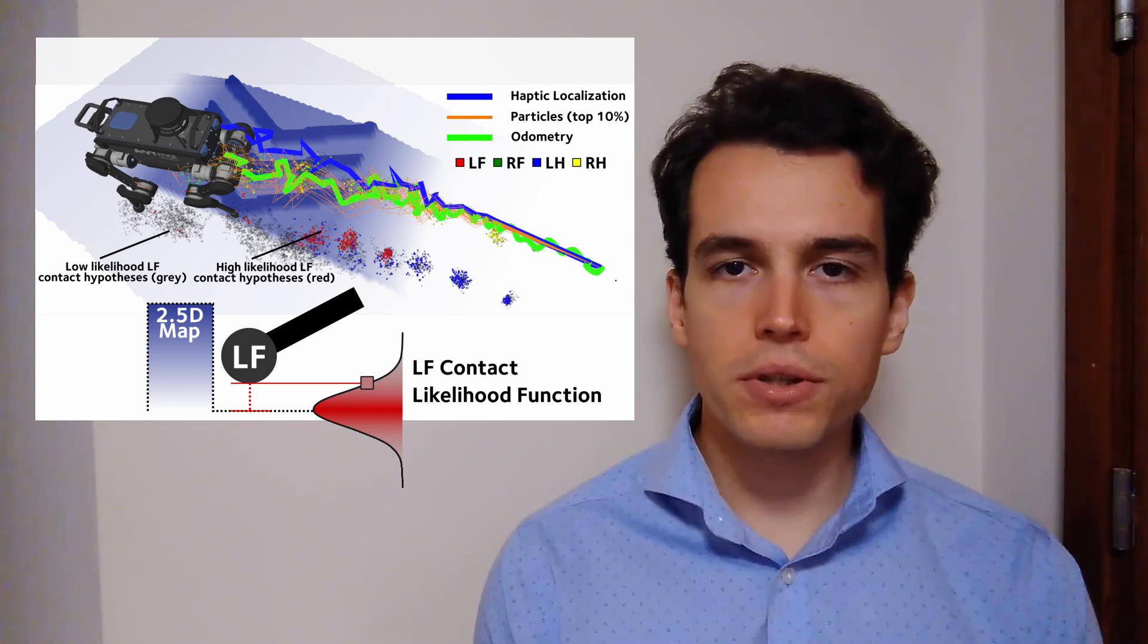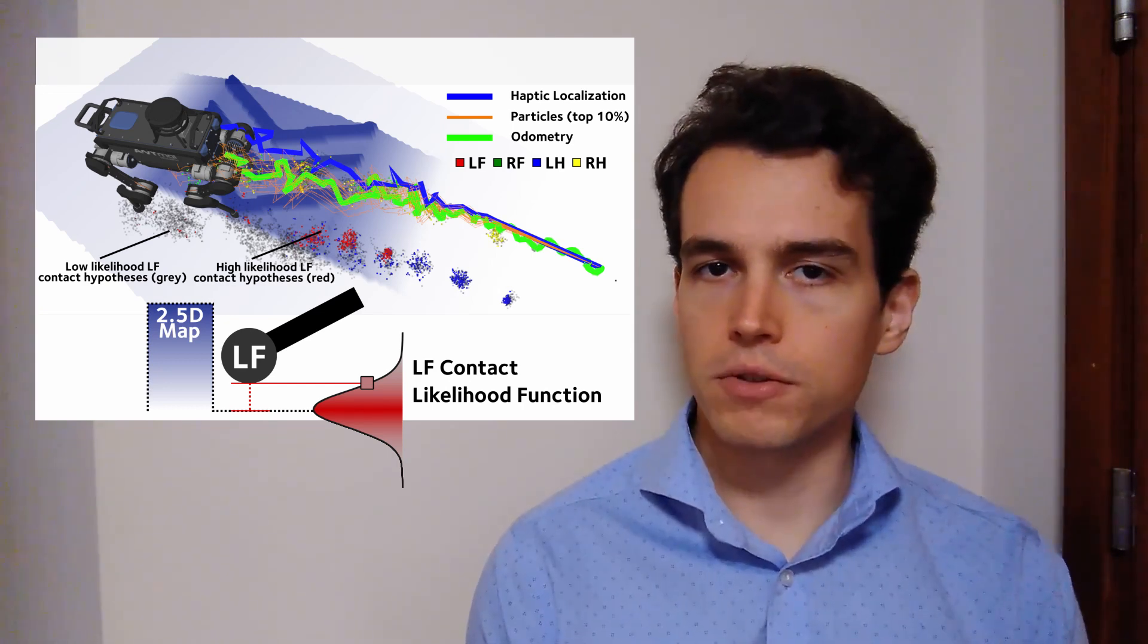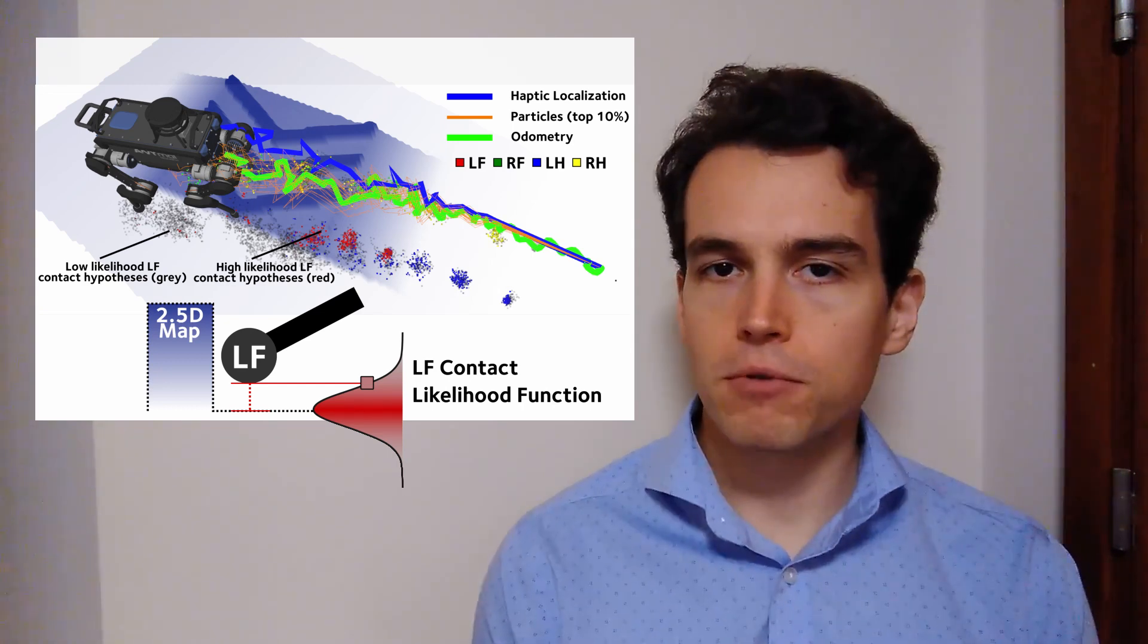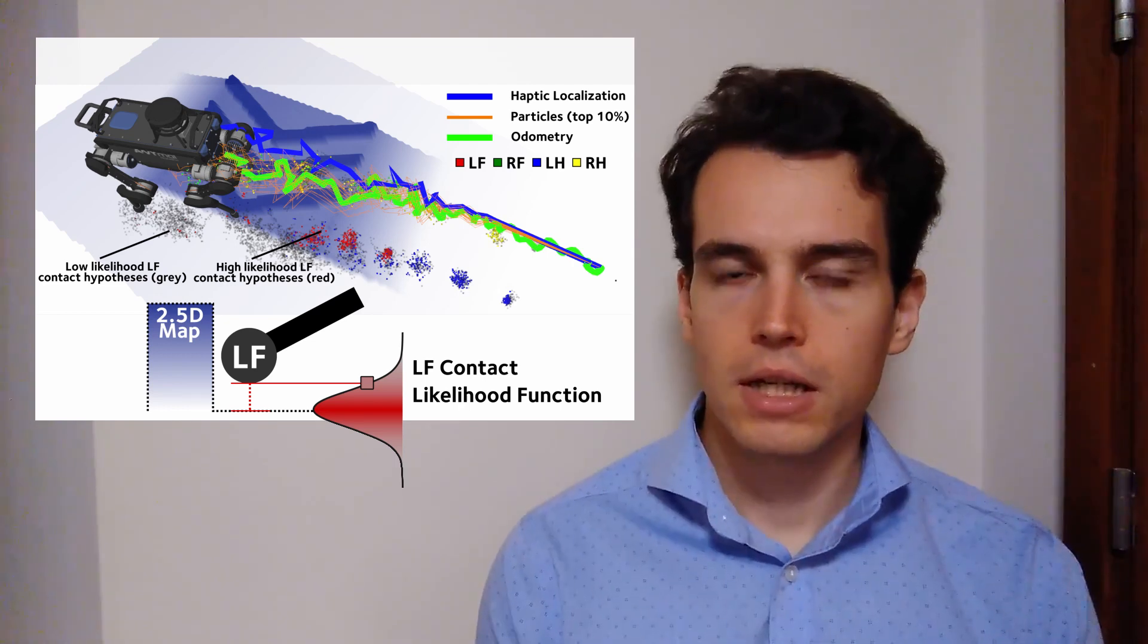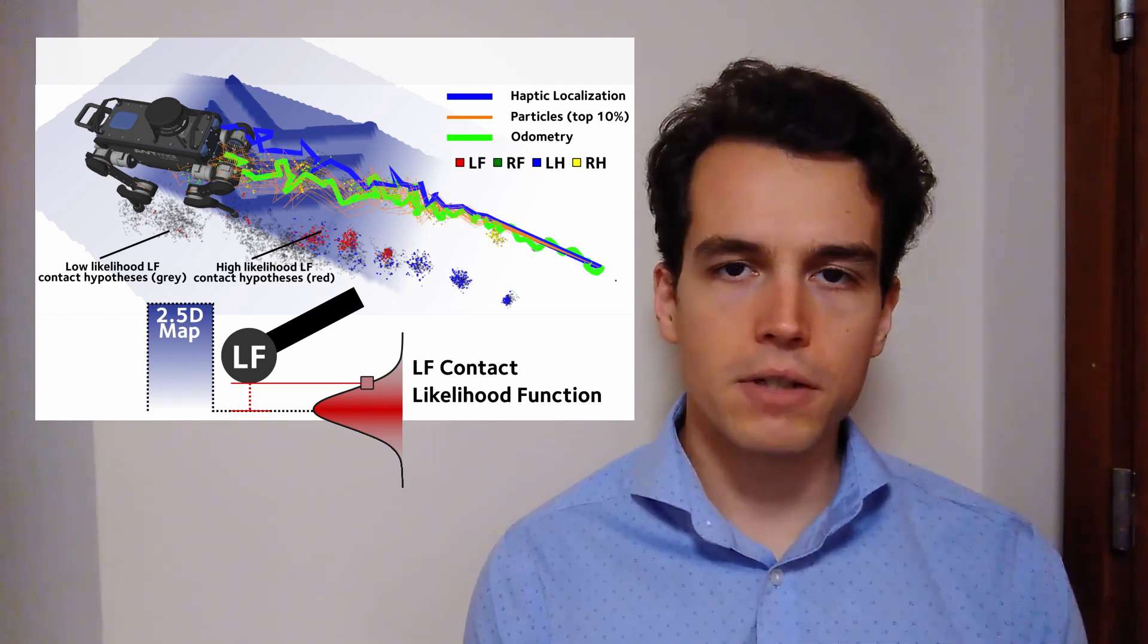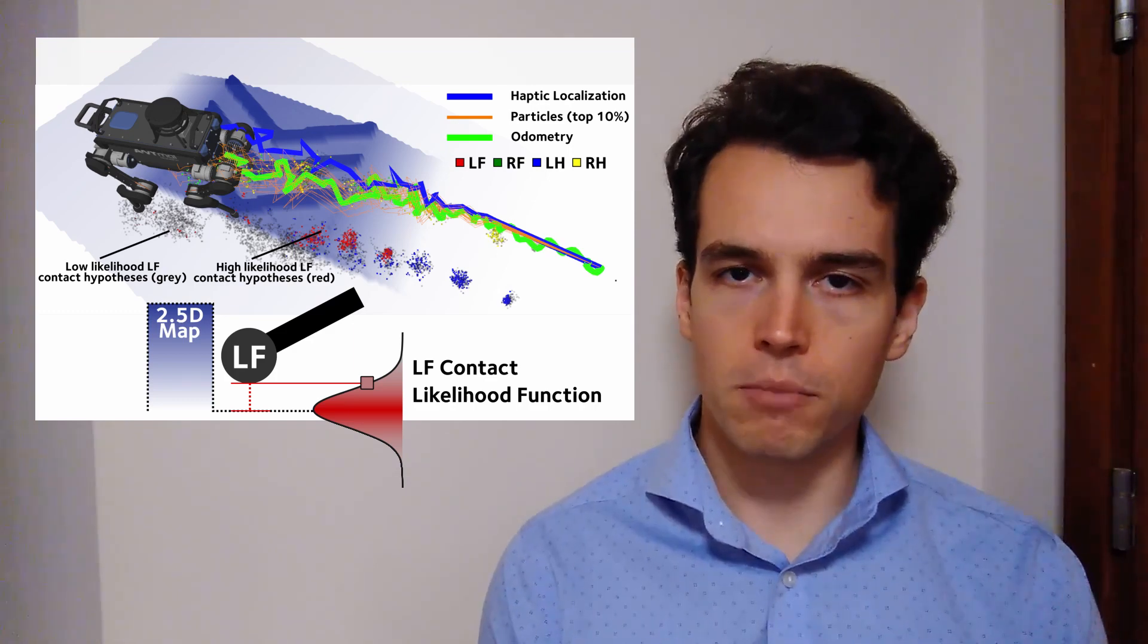As in previous work, we exploit the contacts that a quadruped robot makes with the ground, and compare them to a prior map of the environment. Sample weights are computed based on how well a given contact event explains the robot's pose.